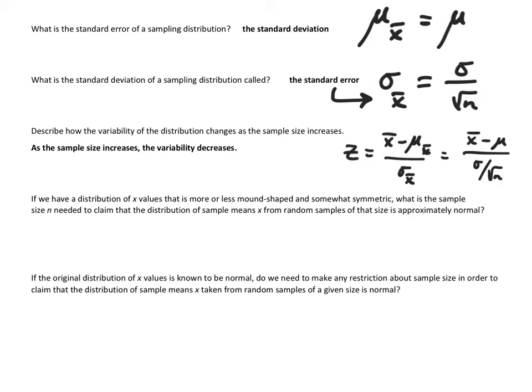If we have a distribution of x values that is more or less mound-shaped and somewhat symmetric, what is the sample size n needed to claim that the distribution of sample means x̄ from random samples of that size is approximately normal? Again, it's agreed upon that the sample size is 30 or larger.